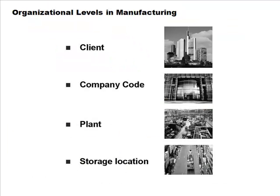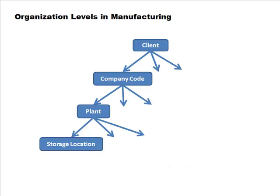The organization levels in manufacturing are pretty much the same as in most of the logistics modules: client, company code, plant, and storage location. Those are the main organization elements we are concerned with — the complete hierarchical structure. Storage location numbers are unique within a plant but not across plants, so to uniquely identify a storage location, you have to specify both the plant and the storage location.